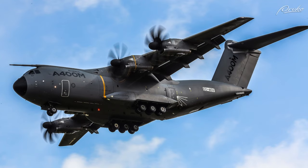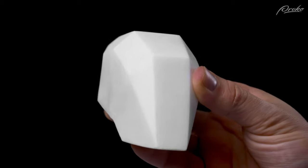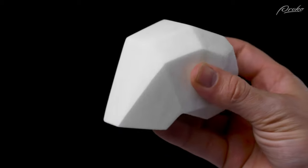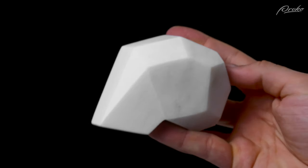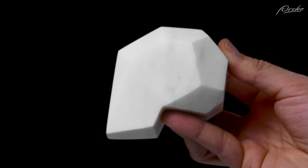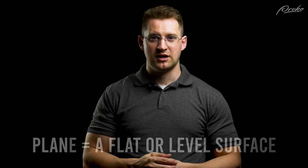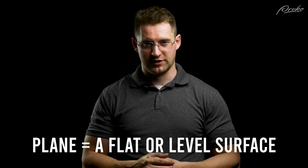Let's begin by talking about planes — not airplanes, these planes. Planes are a common principle in art because they are a simple way of representing complex, organic forms. The definition of a plane is a surface in which, if any two points are chosen, a straight line joining them lies wholly on that surface. Or, more simply put, a flat or level surface.